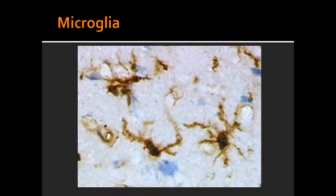Microglia. Describe microglia. Microglia are CNS phagocytes that have a mesodermal origin. They are not readily discernible in Nissl stain and have small irregular nuclei and relatively little cytoplasm. They are known as the scavenger cells of the CNS and respond to tissue damage by differentiating into large phagocytic cells.